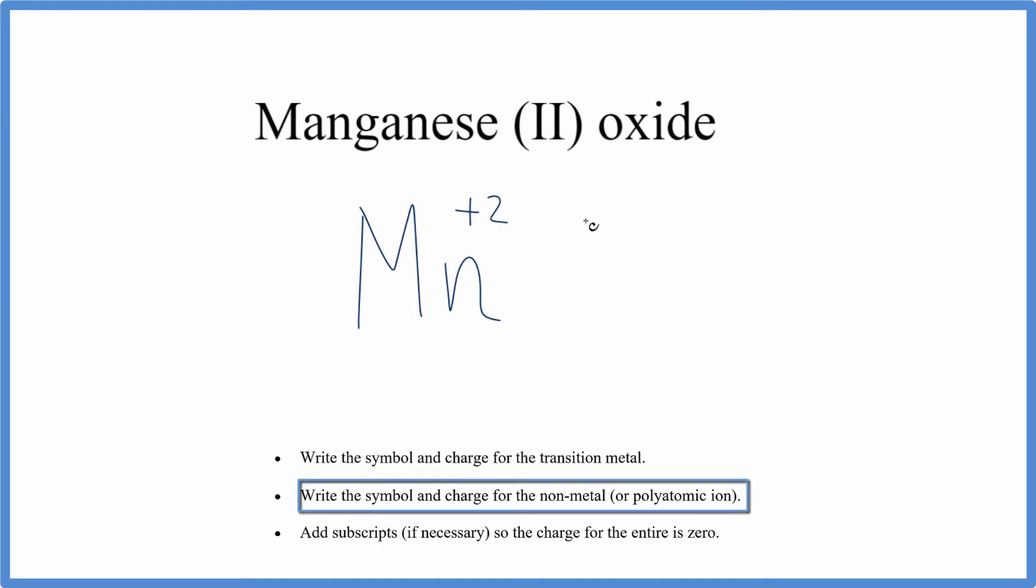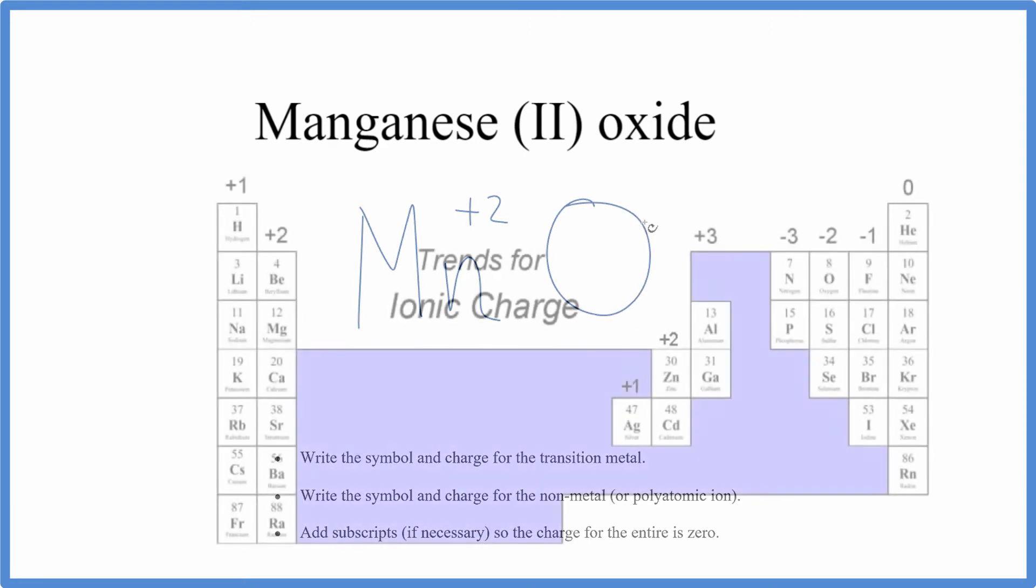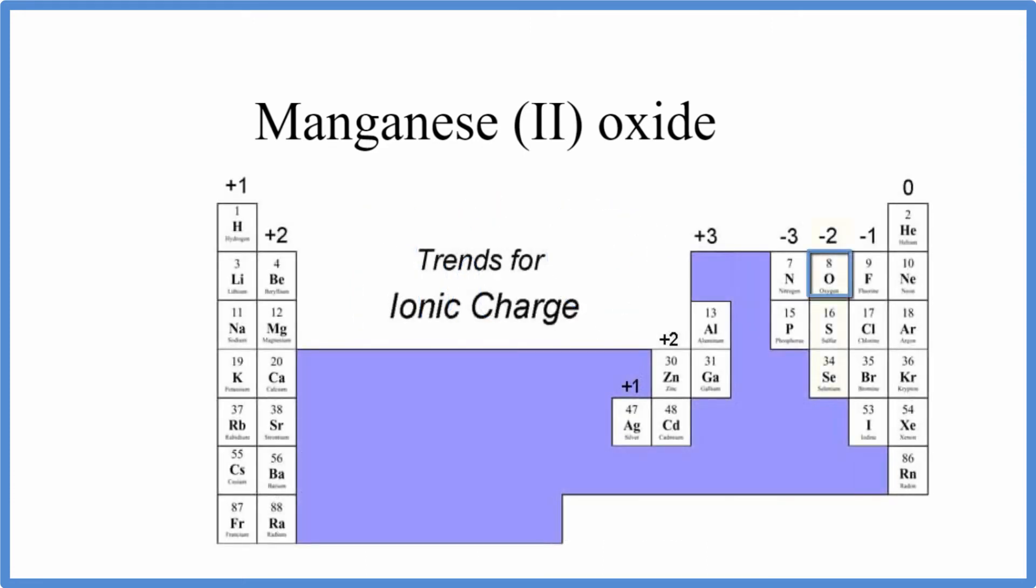So the oxide, that tells us we have an oxygen, so we write O, and we look on the periodic table. We should know that O has a charge of minus 2.